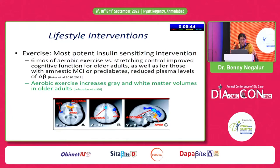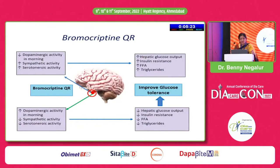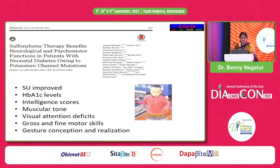Lifestyle intervention has a great impact on hyperglycemia and obesity. Aerobic exercise not only affects glycemic control but also increases gray and white matter volumes in older patients, providing benefit to brain regulatory cells. Bromocriptine quick-release resets the hypothalamic influences of high glycemia, increases dopaminergic activity in the morning, decreases sympathetic and serotonergic activity, and thereby decreases hepatic glucose output.